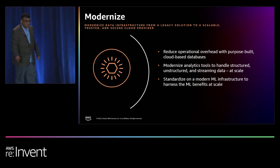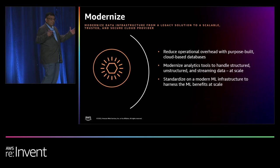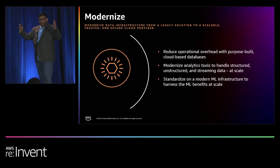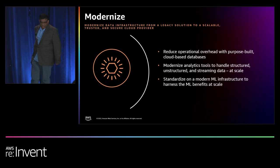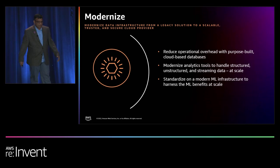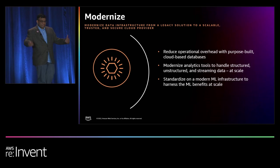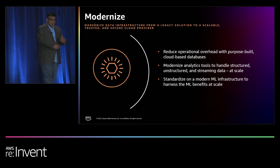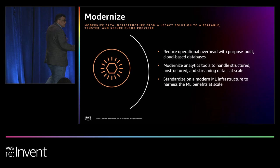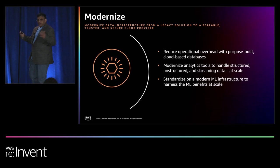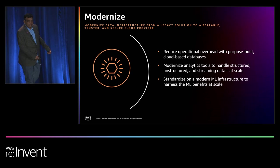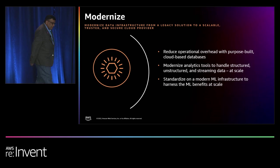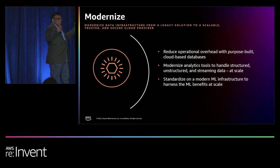Let us start with Modernize. You can migrate and modernize your operational databases into cloud with purposeful databases to reduce your operational overhead and to improve your application performance. You can build scalable data lakes and use a broad and deep collection of purposeful data services. You also need to build unified data access and security controls. You should be able to scale your systems at low cost without compromising performance. You also need to accelerate the pace of machine learning by standardizing ML across the organization with scalable infrastructure and integrated machine learning tools for all types of ML users.